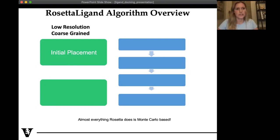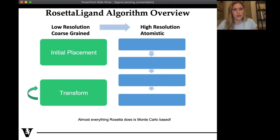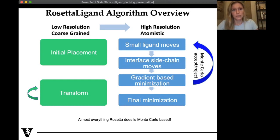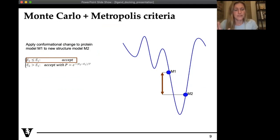The Rosetta ligand algorithm overview: this goes from a low resolution mode to a high resolution mode. We start with our initial placement — simply putting the ligand in the binding pocket — then we do what's called a transform, which cycles through on a Monte Carlo basis. Then we move into high resolution or atomistic representation of the protein, doing smaller ligand moves, interface and sidechain movements, repacking, gradient-based minimization to get to a local minimum, accepted or rejected on a Monte Carlo basis, and ending with a final minimization. Almost everything Rosetta does is Monte Carlo based.